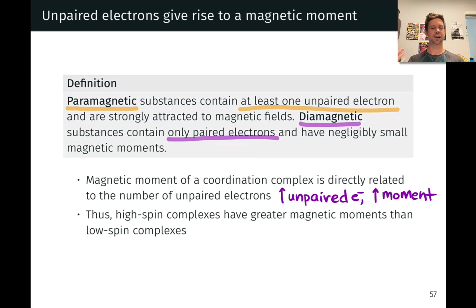And so high spin complexes tend to have greater magnetic moments overall, greater measured magnetic moment for the substance as a whole, than low spin complexes.